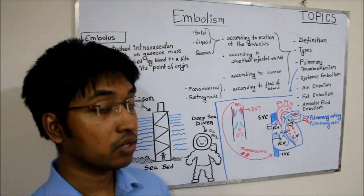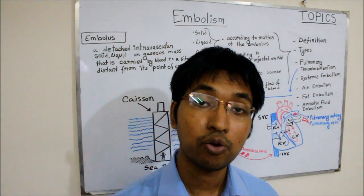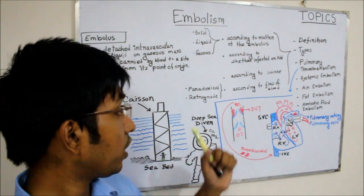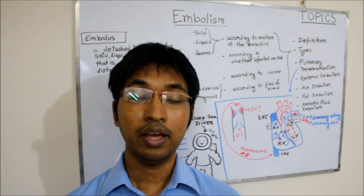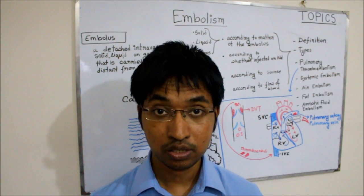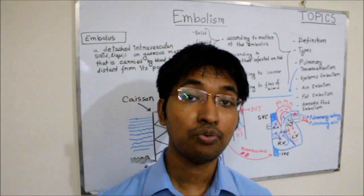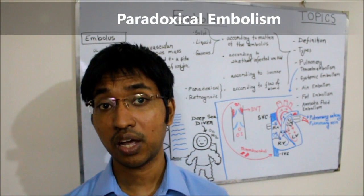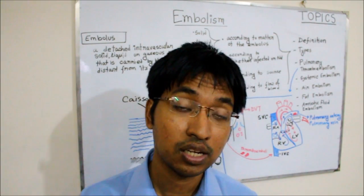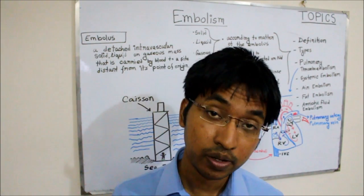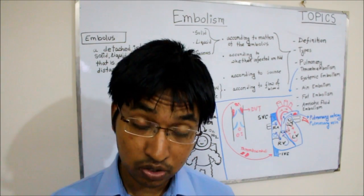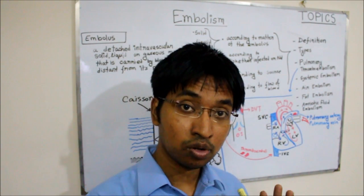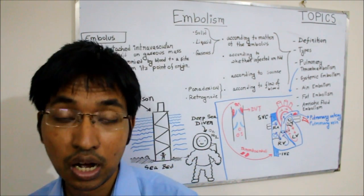The fourth way to classify embolus is according to the flow of blood. According to blood flow, embolus can be of two types: paradoxical embolus and retrograde embolus. When an embolus is carried from the venous side of the circulation into the arterial side or vice versa, that is known as paradoxical embolus. Normally an embolus from the venous side must not cross into the arterial side, but one cause of this is septal defect — interventricular or interatrial — which allows embolus to cross.